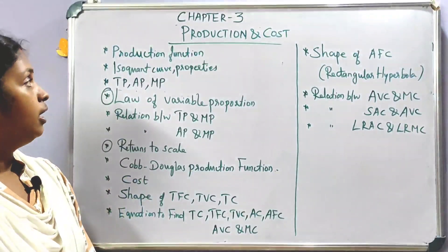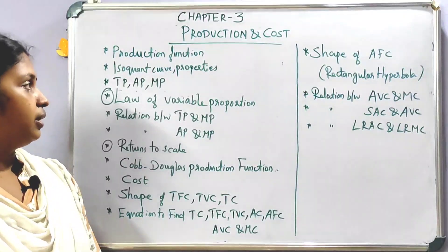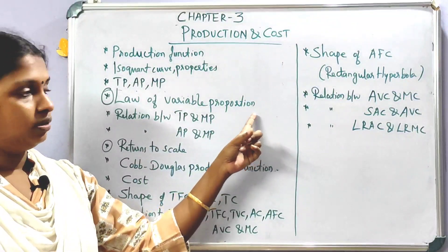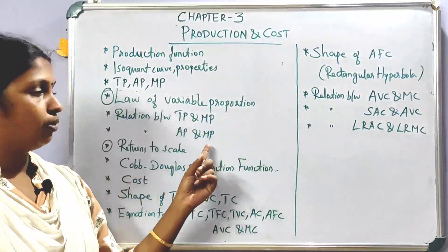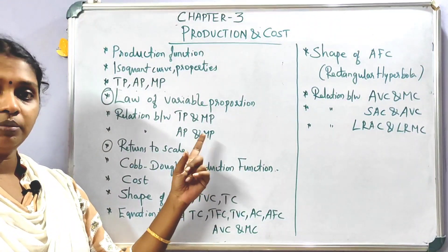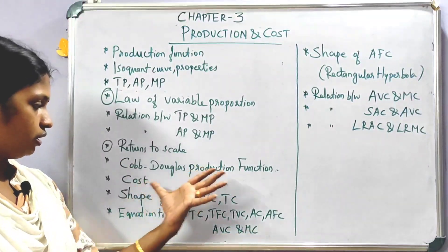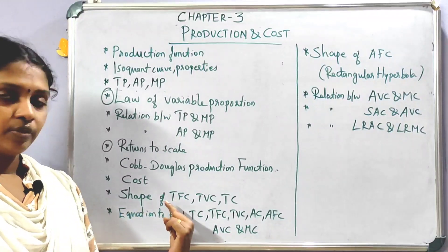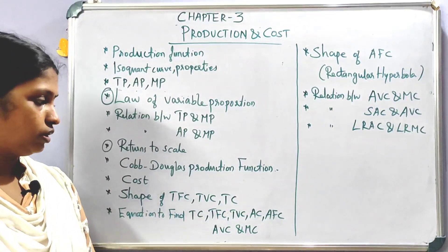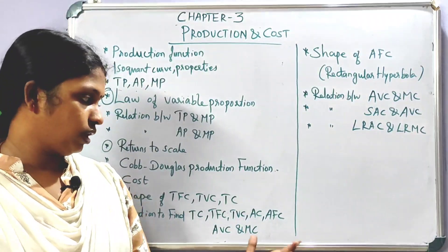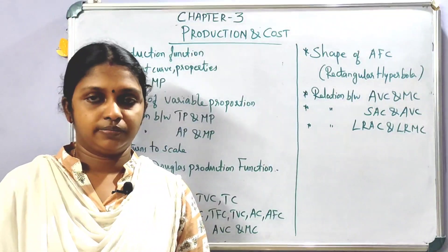So the important topics in Production and Cost are: production function definition, Isoquant properties, total product, average product, marginal product, Law of Variable Proportion, relationship between AP and MP and TP and MP, returns to scale. For cost: shapes of TFC, TVC, TC; equations for total cost, total fixed cost, total variable cost, AFC, AVC, and marginal cost.